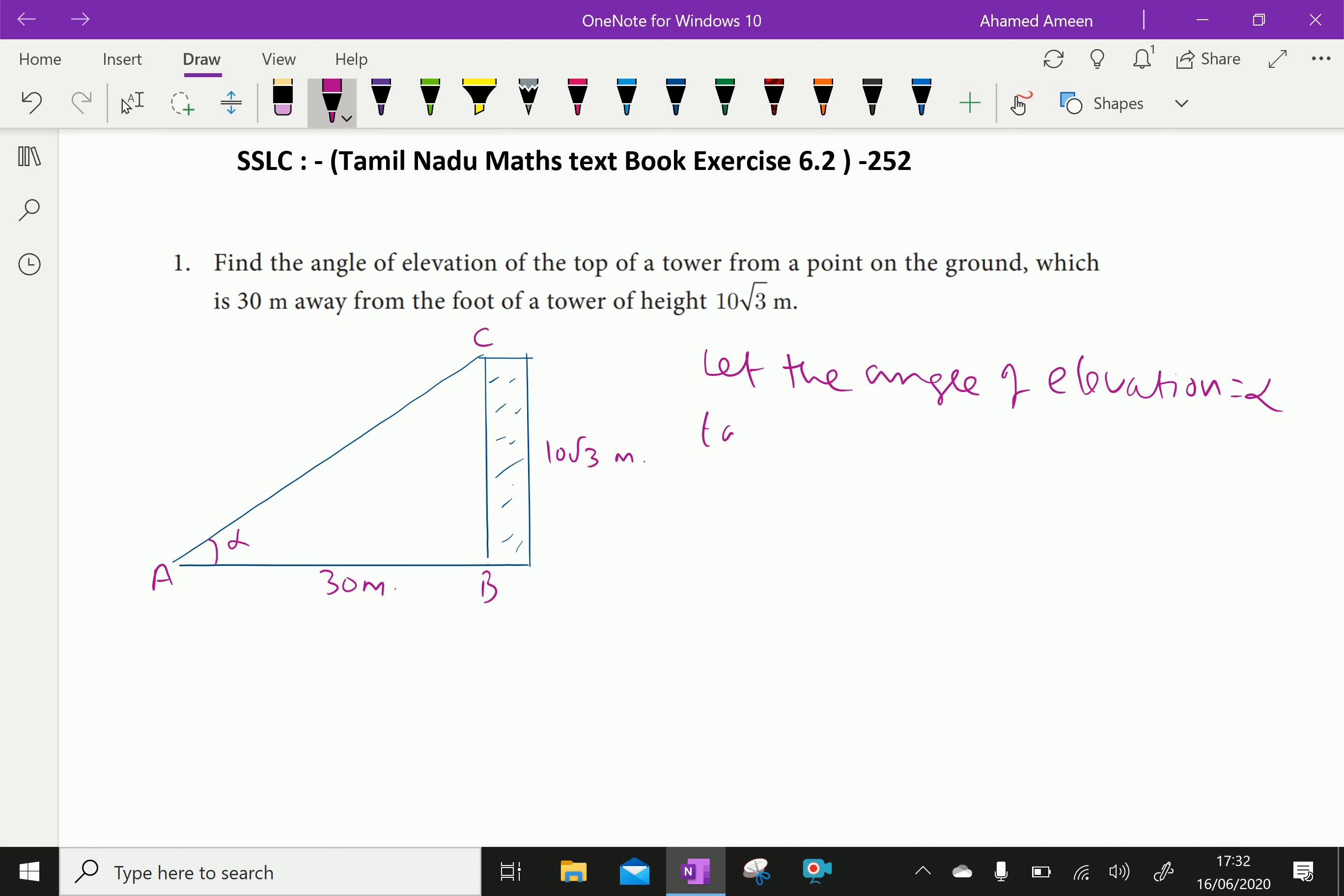Now, we know that tan alpha equal opposite by adjacent, opposite here, BC over AB, and the triangle ABC, which is equal. BC is 10 root 3, and AB is 30. Now, cut common.